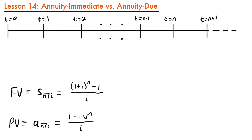We identify annuity immediate with the idea of payments being made at the end of each payment period. In the case of a future value scenario, the accumulation value we are trying to find — that future value — is calculated at the time of the final deposit. It is calculated immediately after that last deposit is made, which is why we call it an annuity immediate. As soon as that last payment is made, the future value is calculated.